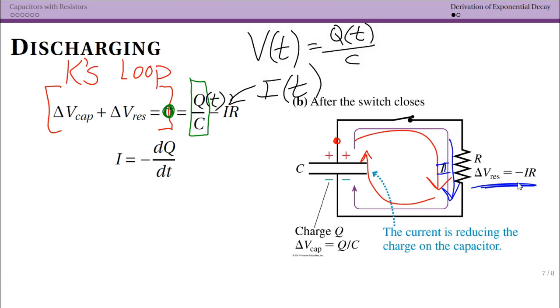So the next thing we're going to use is that our current is actually equal to our change in Q with time. So dQ dt. And note that it is negative. Why is it negative?